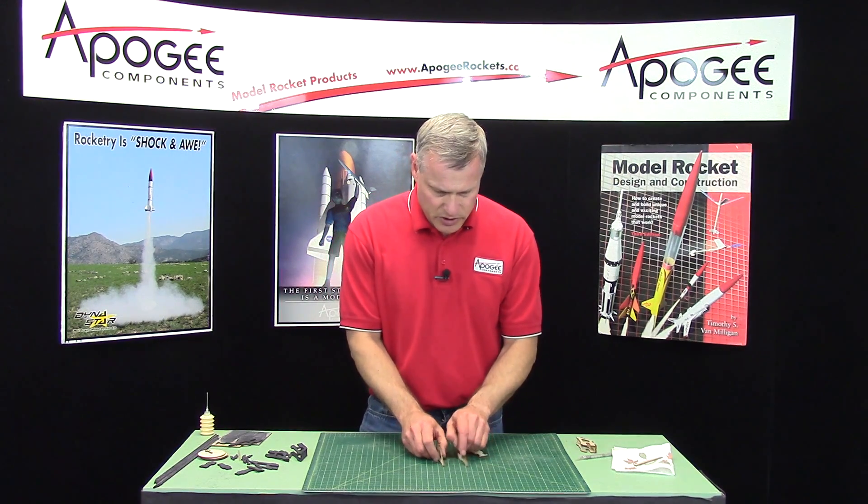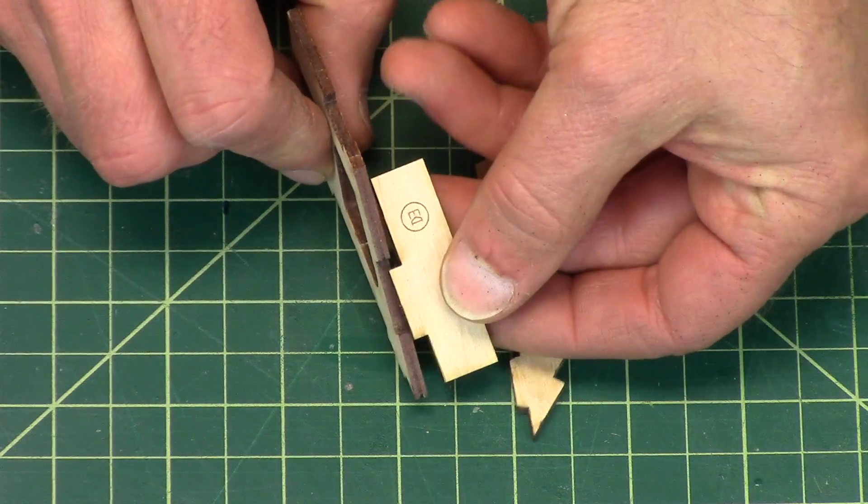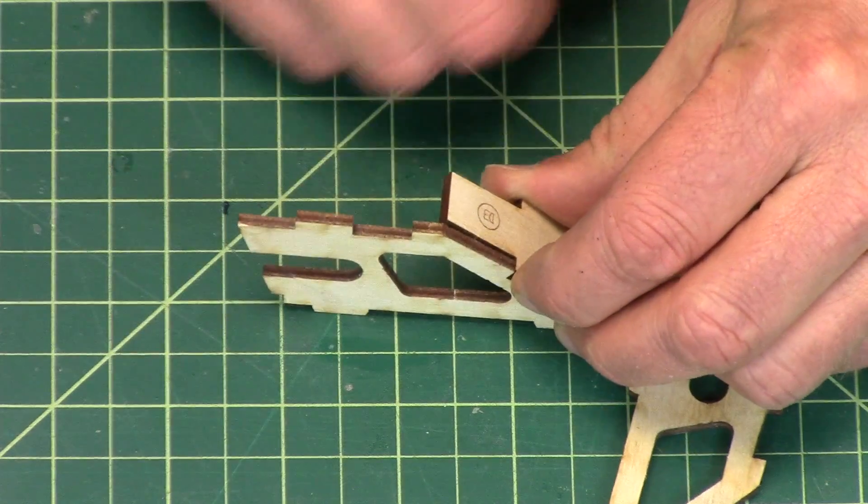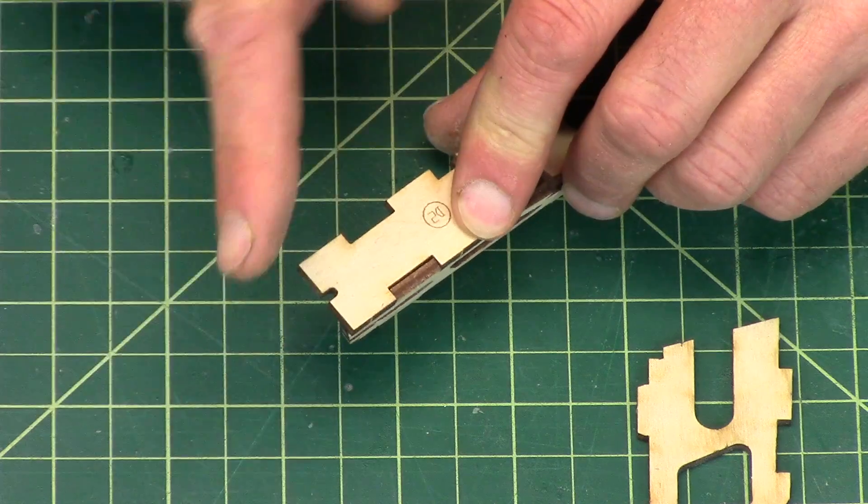So the way this goes together, you'll have your two side pieces. D3 will go on the front slope, and D2 on the back slope, or on the back, with the little cutout towards the bottom.